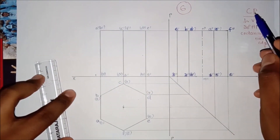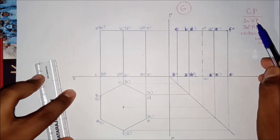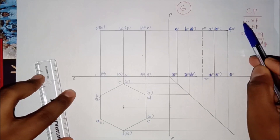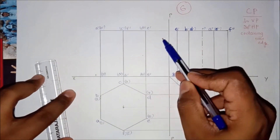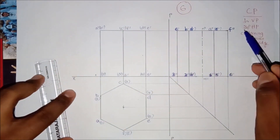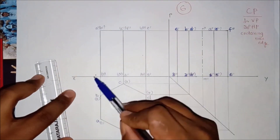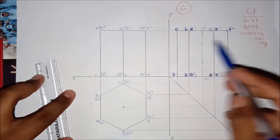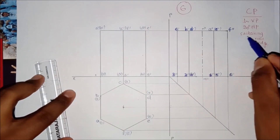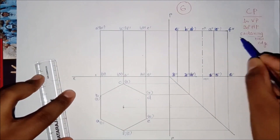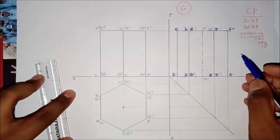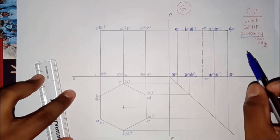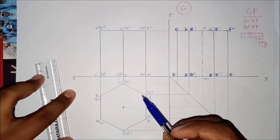A cutting plane is perpendicular to VP and 30 degrees to HP. Perpendicular to VP means it is cut here, and the inclination to HP is 30 degrees. The section contains a base edge.